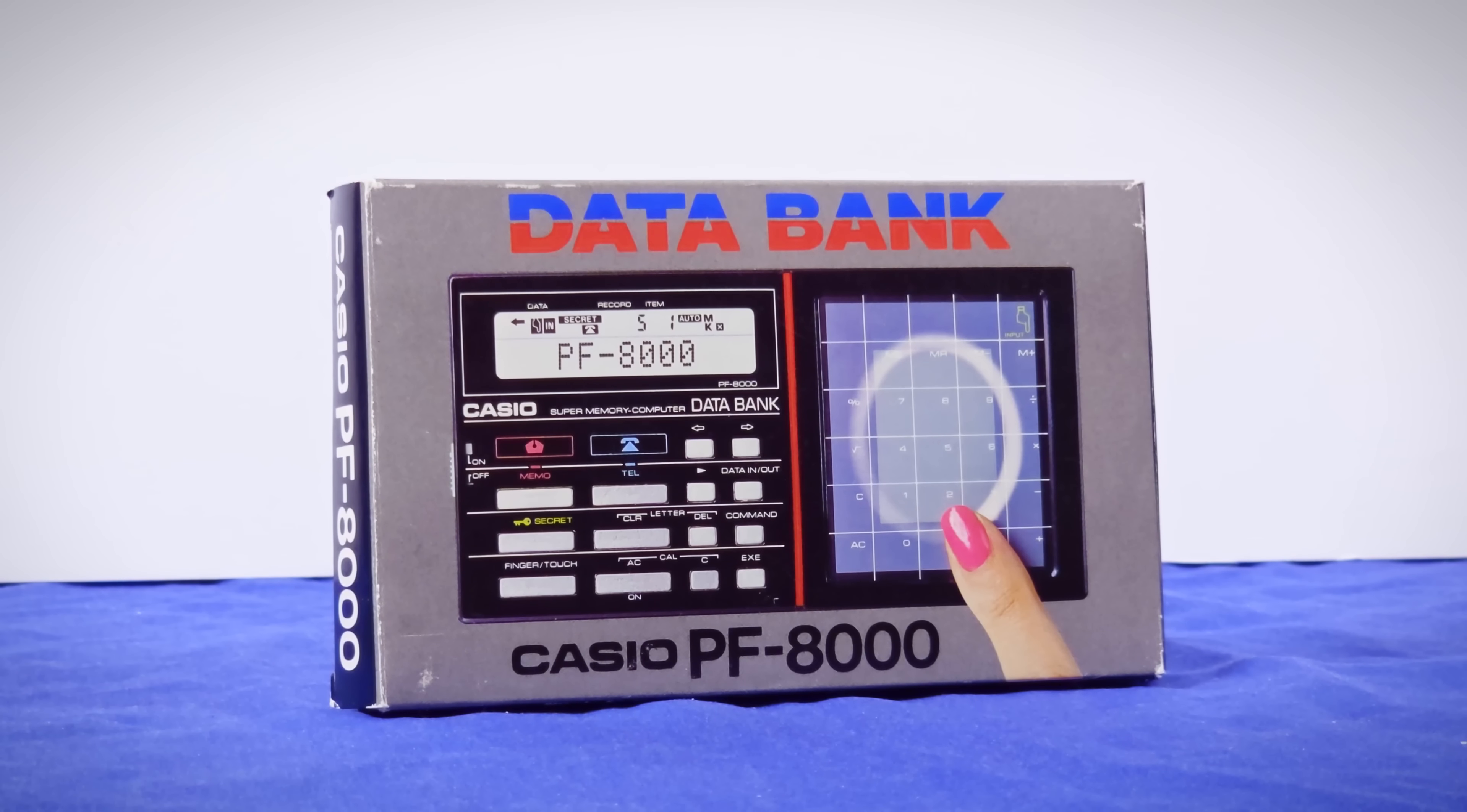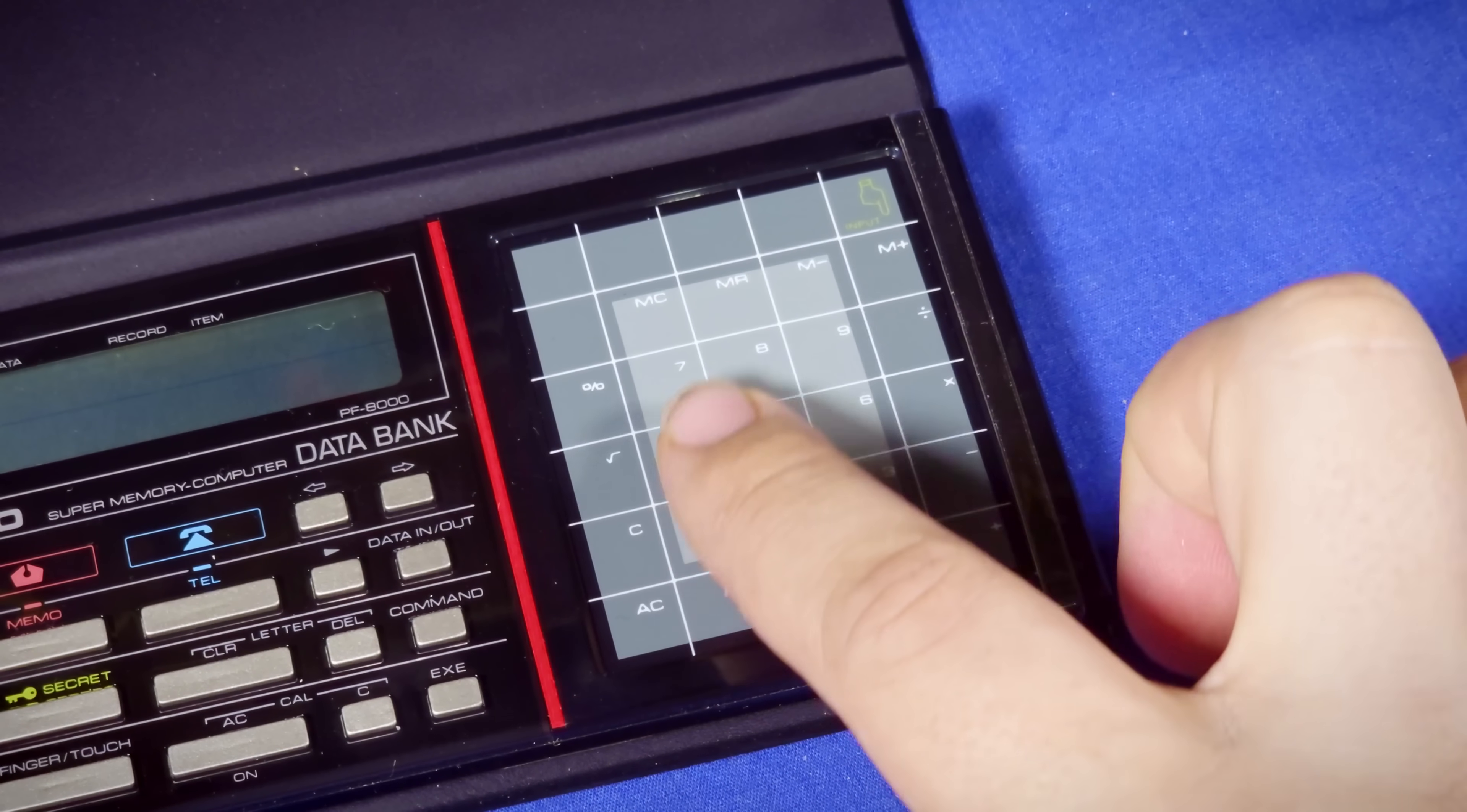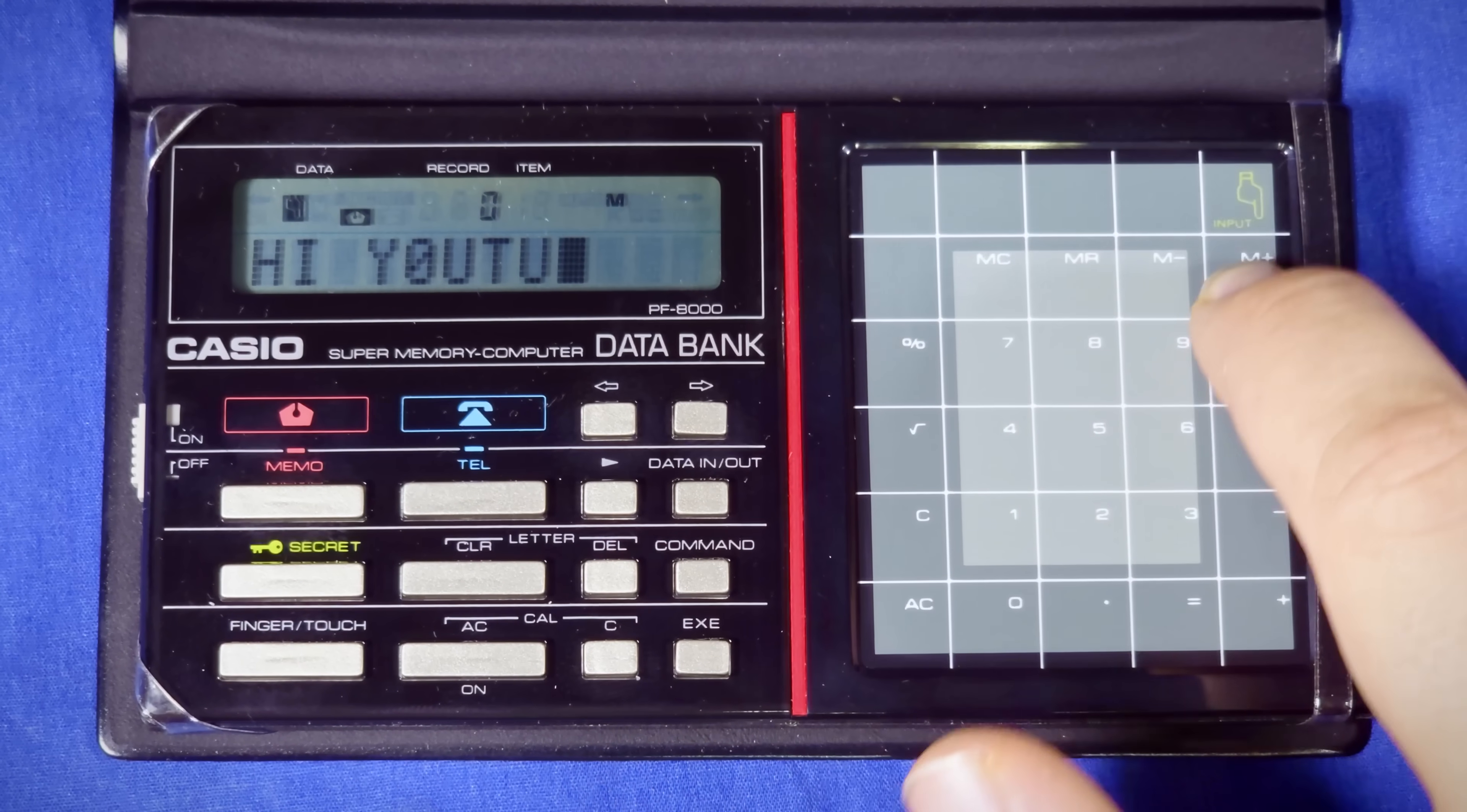This is a Casio PF8000 from 1983, the ancestor to the IF8000 I promise we'll get back to. It has a much more impressive touch element than the Sharp that also uses large cells, but is meant for you to draw letters on as a form of data entry. You write in data on one side while watching the input on the other.